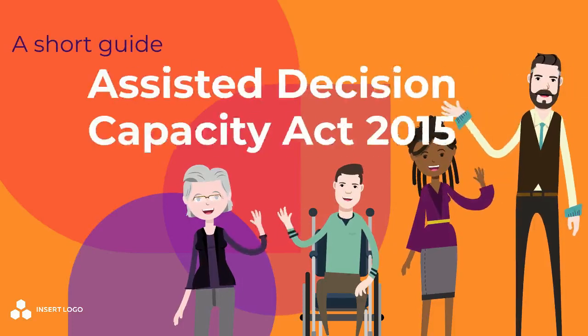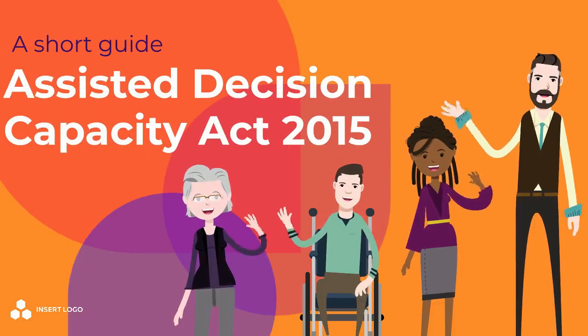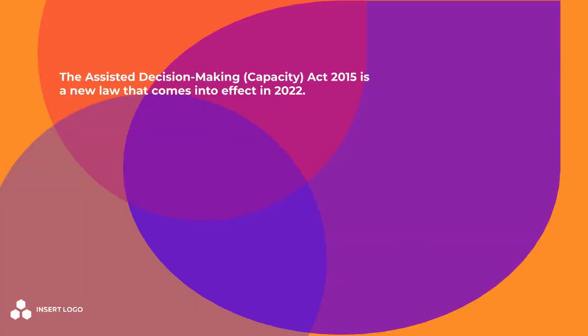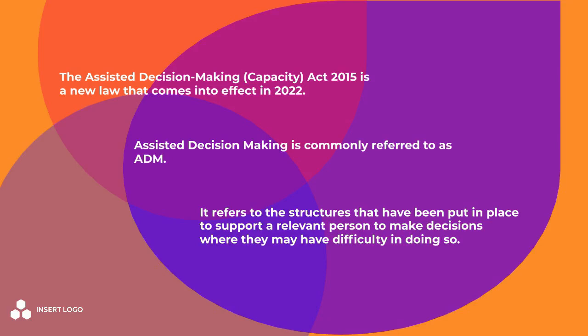A short guide to the Assisted Decision Making Capacity Act 2015. The Assisted Decision Making Capacity Act 2015 is a new law that comes into effect in 2022. Assisted Decision Making, commonly referred to as ADM, refers to the structures that have been put in place to support a relevant person to make decisions where they may have difficulty in doing so.